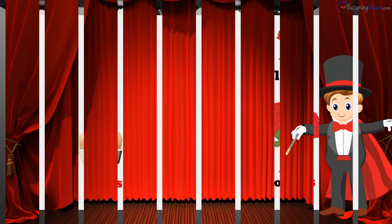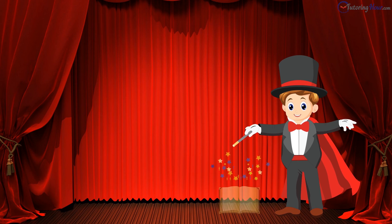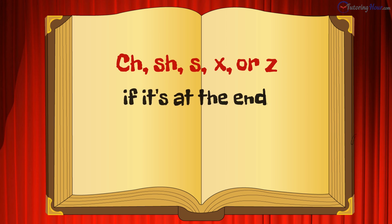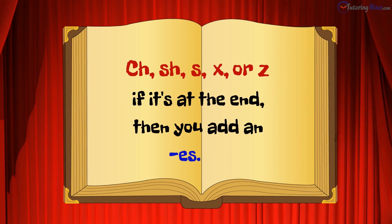Now, Aaron is up with the next trick. The spell reads C-H, S-H, S, X, Z. If it's at the end, then you add an ES.